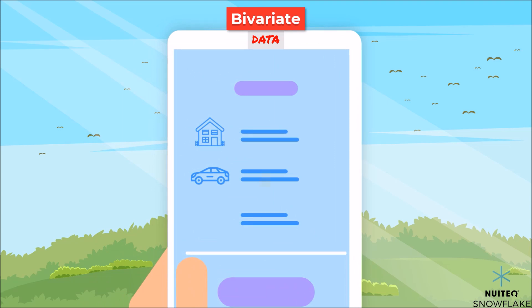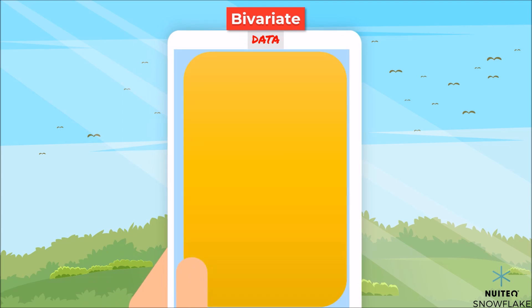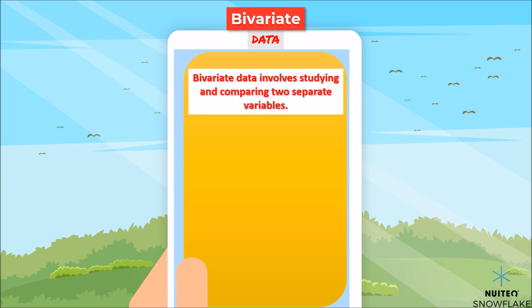Okay, let's start with the concept of bivariate data. 'Bi' means two. Therefore, bivariate data involves studying and comparing two separate variables. Bivariate data is used to look for relationships between variables. One of the main purposes is determining whether or not two variables are related, to see if one variable causes the other.